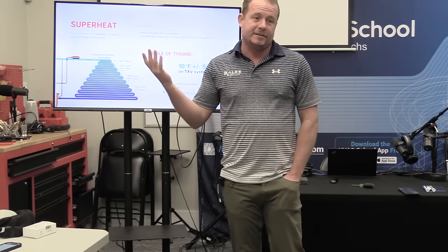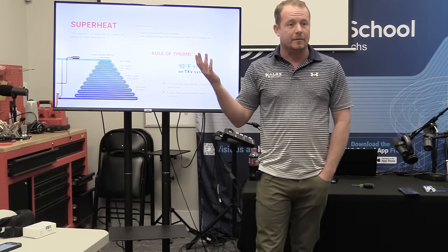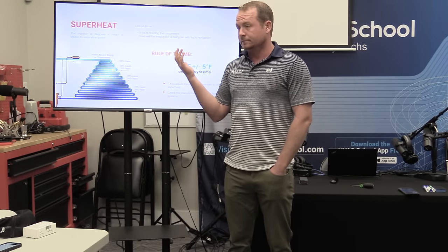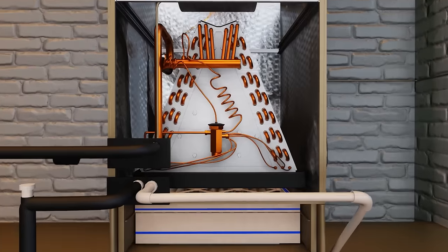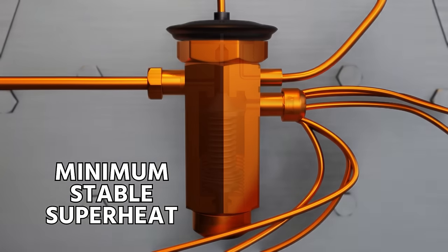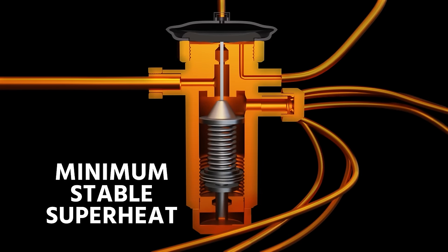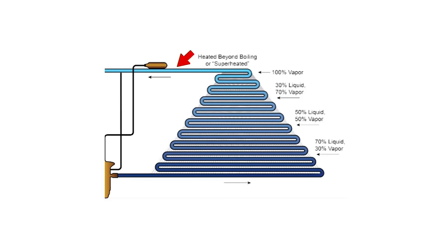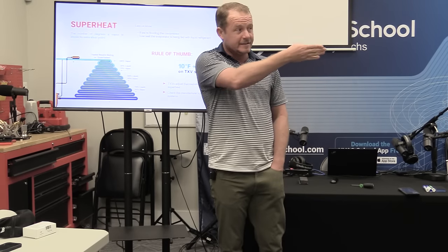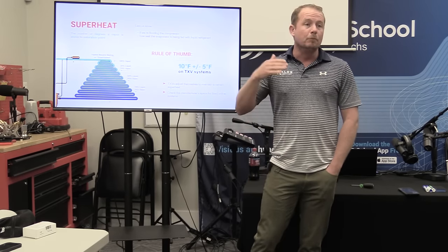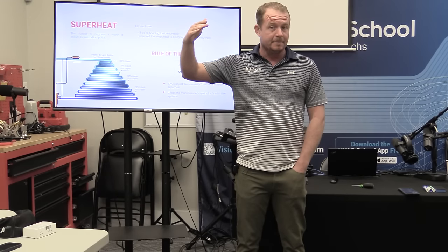Then the question is: why don't we just get superheat as low as possible — why not get it to one degree? We could get liquid back to the compressor. Because the metering device, in this case a TXV, has a minimum stable superheat. In order for it to balance out, it has to have a little buffer. So these are set so that in residential we most commonly see at the outlet of the evaporator coil something around 12, 13, 14 degrees. But sometimes tighter — I've seen units that run more like 6 or 7.